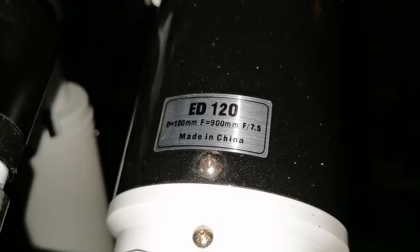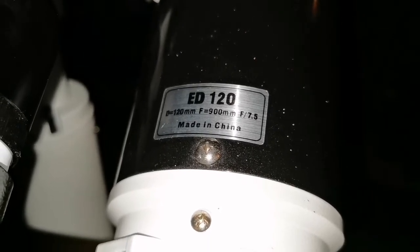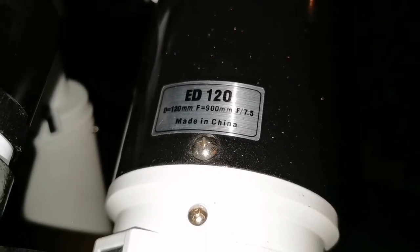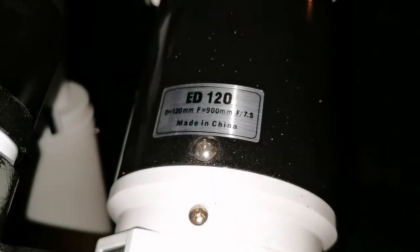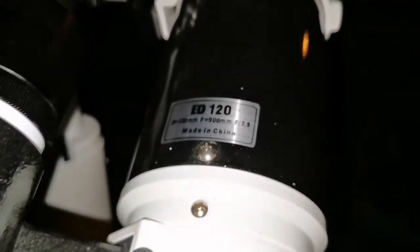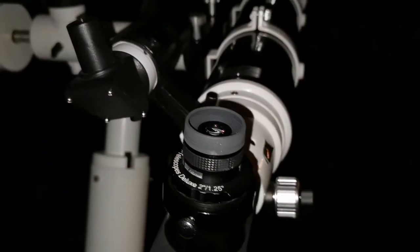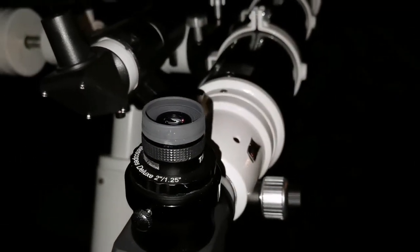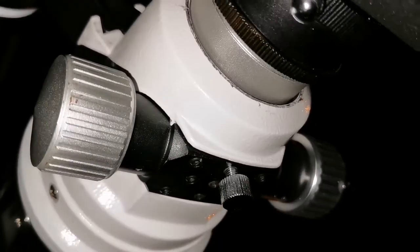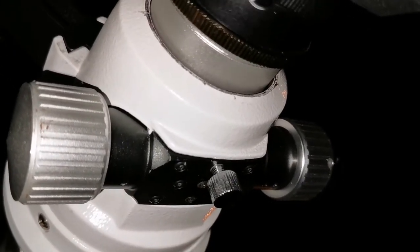The ED120, f/7.5 focal ratio, had a really bad problem. It has a dual Crayford focuser and it was slipping loose, completely coming down.